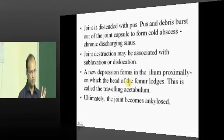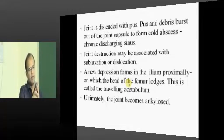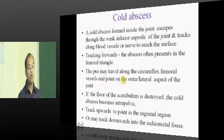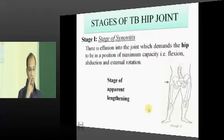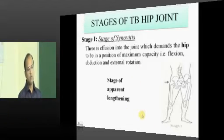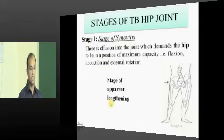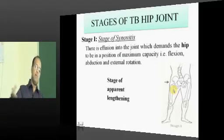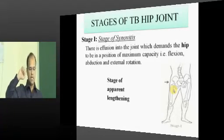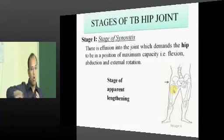In any arthritis there is pus formation, distension, dislodgement, dislocation or subluxation, or erosion of the articular surfaces ultimately ending up in ankylosis — that is what happens in tuberculosis. Cold abscess can present and track around nerves. There are various stages. Stage 1 is tuberculosis synovitis — the infection is lodged in the synovium. It is also called the stage of upper end lengthening because the hip is kept in the position of maximum synovial accommodation: flexion, abduction, and external rotation. Once in abduction the limb length appears more — hence upper end lengthening.